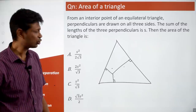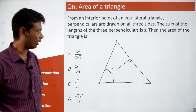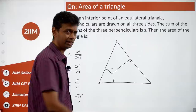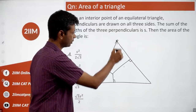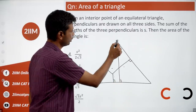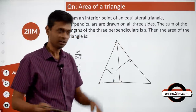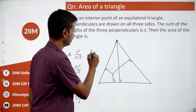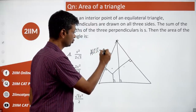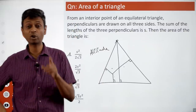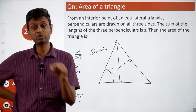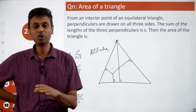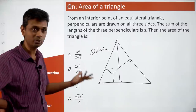One thing is to prove it will be a constant. From an exam point of view, pick a convenient point — like a vertex. From that vertex, drop perpendiculars to the three sides: two of them are just points (zero length), and the total is nothing but the altitude. So the sum of the three perpendiculars equals the altitude of the equilateral triangle. Pick one point and you're good to go.